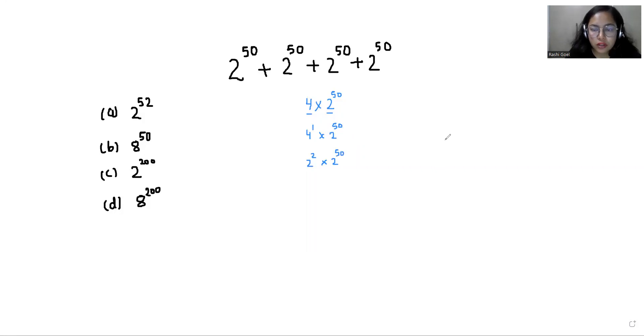Now we have the identity that if a power x multiply a power y we can write it as a power x plus y. So write the base 2 and add the powers. So 2 plus 50 is 2 power 52.